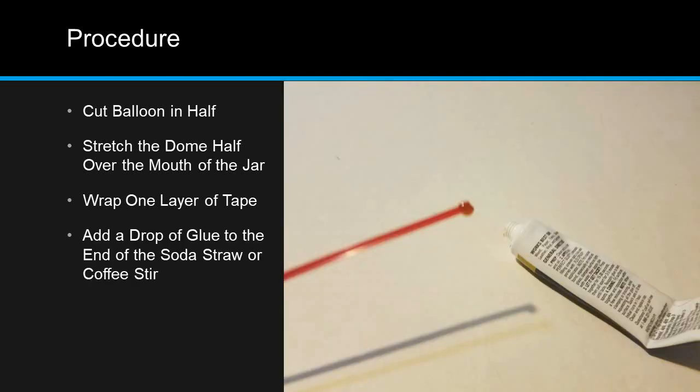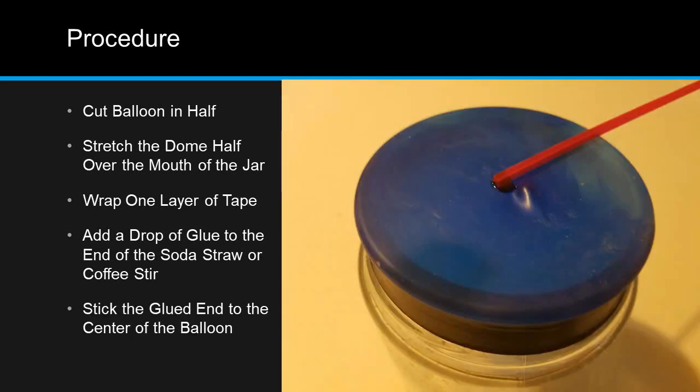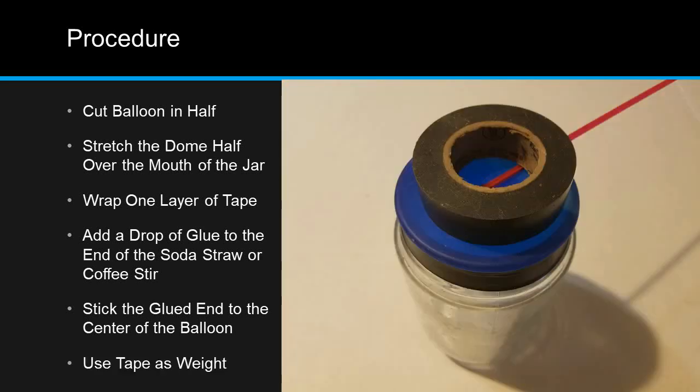Add a drop of glue to one end of your soda straw or coffee stir. Stick the glued end as close to the center of the balloon as you can get it. Use the roll of electrical tape as a weight to hold down the straw or coffee stir until the glue hardens.